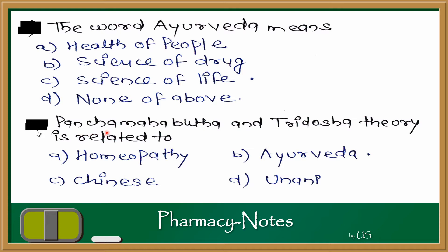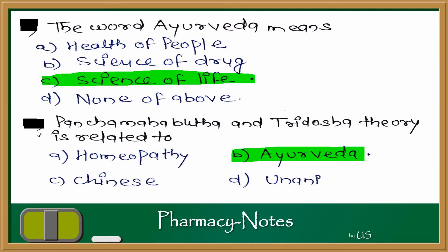Second question: 5 Mahabhutas and 3 other theories are related to which system? If we go to Ayurvedic systems or medicine systems, we have learned a lot of treatment systems like Ayurveda, Yunani, Homeopathy, Chinese, and Siddha. The options are Homeopathy, Pythagorean theories, Ayurveda, and Chinese and Indian theories. The answer is Ayurveda — 5 Mahabhutas and related elements are part of the Ayurveda system.